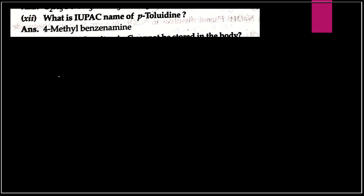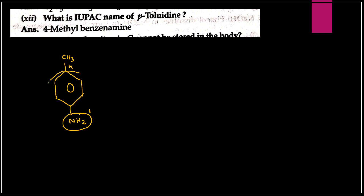Next question: p-Toluidine — para position par kya laga hua hai? P-Toluidine mein para position par methyl group laga hota hai aur amine group toluene ring par. Iska IUPAC name likhna hai — functional group amine ki priority one hogi. Ring numbering: 1,2,3,4 — methyl group position 4 par aa raha hai. Benzene ring par CH3 laga hua hai.